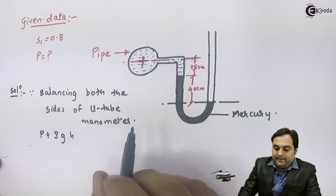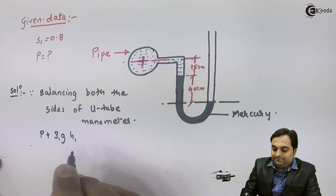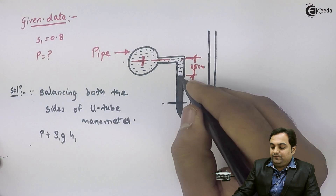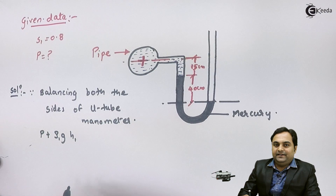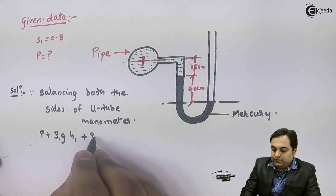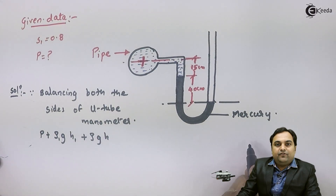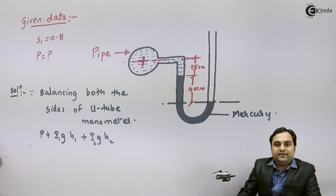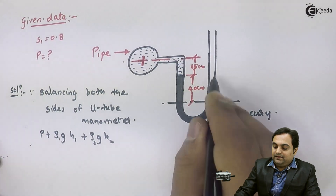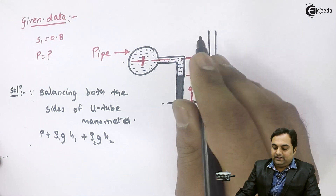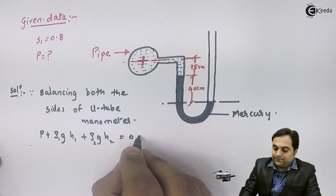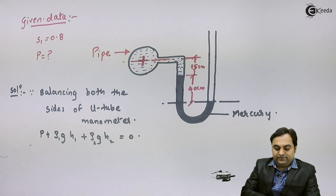For the fluid inside the pipe I'll write suffix 1. In the left portion we also have mercury of 40 centimeters height, so its pressure is added: plus rho × g × H, with suffix 2 for mercury. In the right limb there is no fluid above the datum, so that equals zero. This completes the balancing of both limbs.